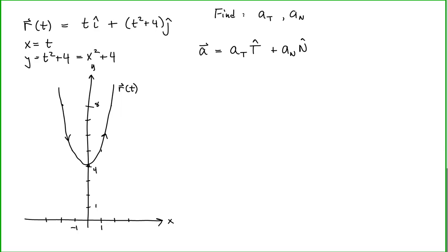Let's look at a point on our parabola. This point will have a velocity vector — velocity is always tangent to the curve. Since this curve has a curvature pointing to the inside of the curve, the acceleration at any point on this curve will be directed inward. So qualitatively, I'll draw the acceleration vector pointing inward.